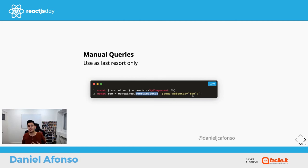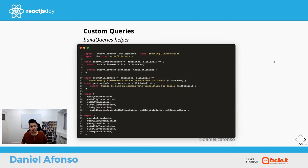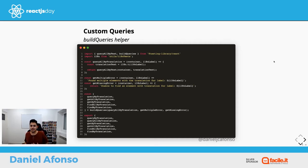Custom queries can be created using the buildQueries helper supplied by the React Testing Library. This allows you to create your own queries fitting your specific needs. If you go down this path, create them in a way that encourages developers to test components in a user-centric way without focusing on implementation details.